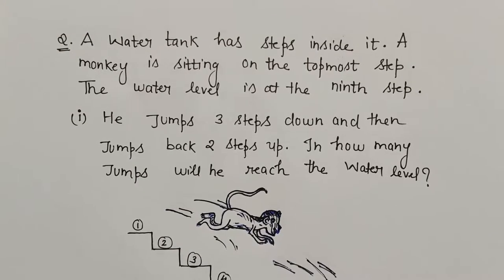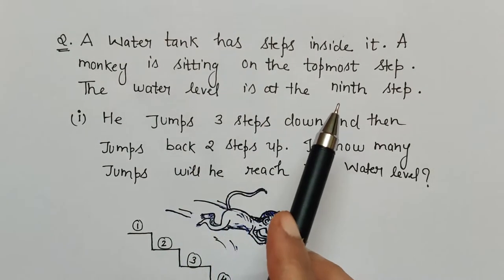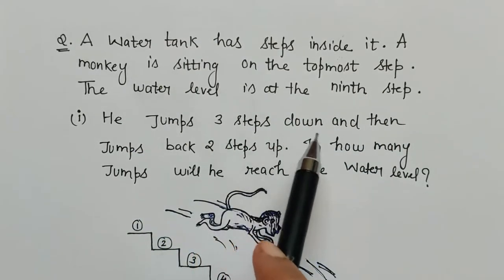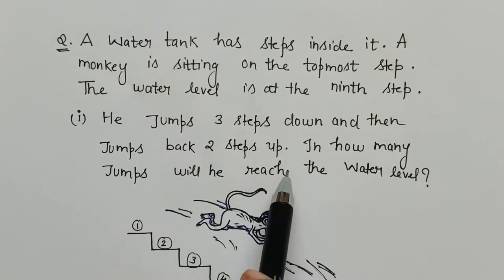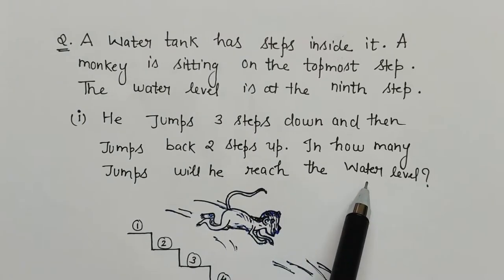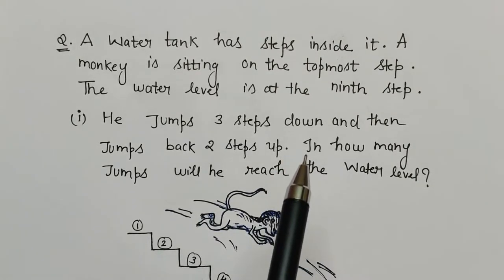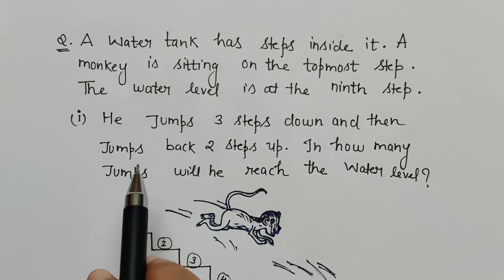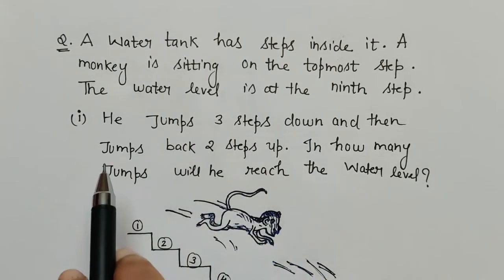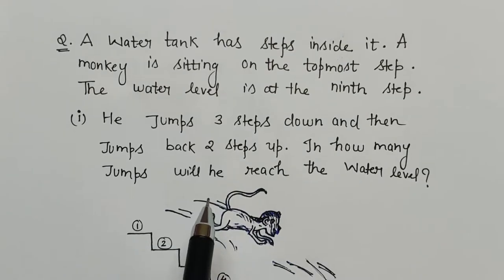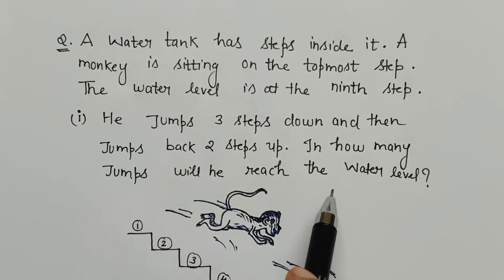In this video we are going to discuss the monkey problem of class 7. There is a water tank with steps inside it. A monkey is sitting on the topmost step and the water level is at the ninth step. He jumps three steps down and then jumps back two steps up. We are asked to find out in how many jumps will the monkey reach the water level.